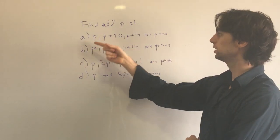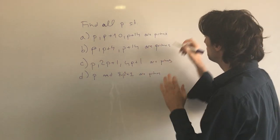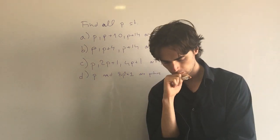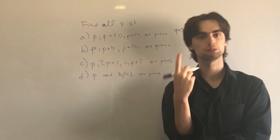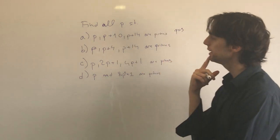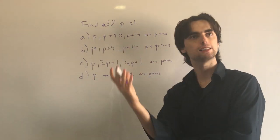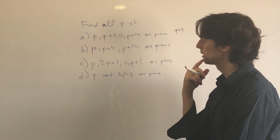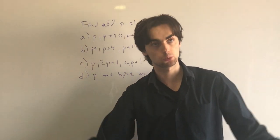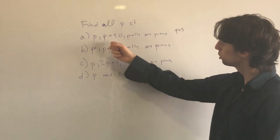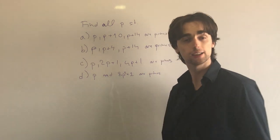What about P equals 3? We get 3, 13, 17 — yes, all of them are primes, so P equals 3 works. What about P equals 5? We get 5, 15 — but 15 is divisible by 3, so it doesn't work. P equals 7 gives 7, 17, 21 — and 21 is divisible by 3, doesn't work. P equals 11 gives 11, 21 — doesn't work. P equals 13 gives 13, 23, 27 — and 27 is divisible by 3.